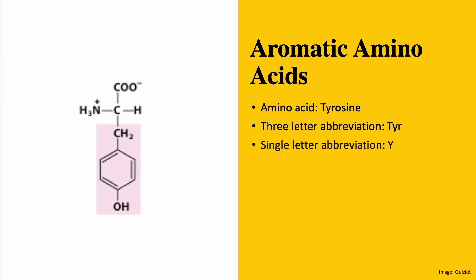And finally in this group, we have tyrosine. This molecule is also easy to remember because it's an extension of phenylalanine. The only difference is that it has a hydroxyl group — that is an OH group — attached to the benzene ring at the fourth carbon. This is also called the para position.